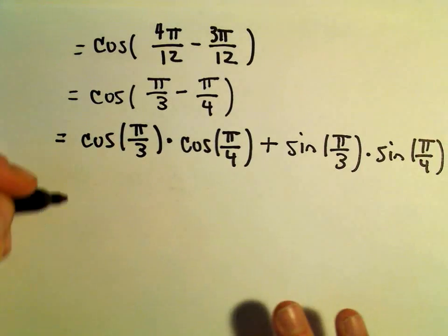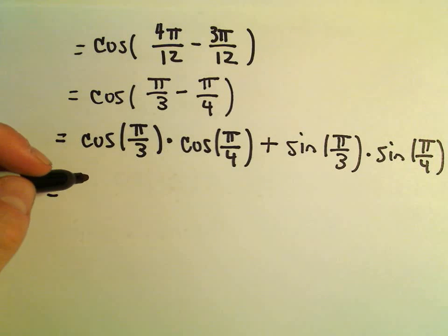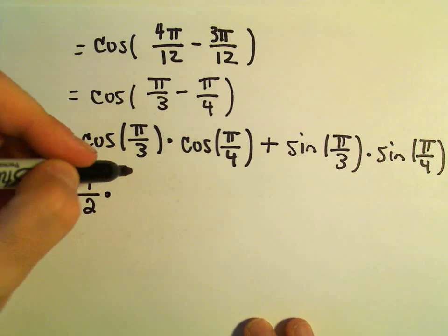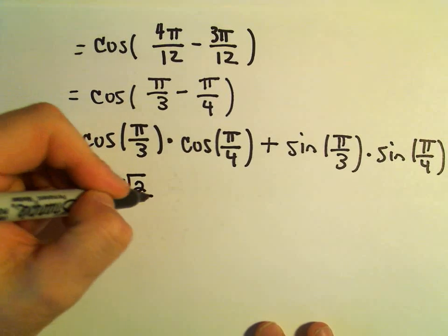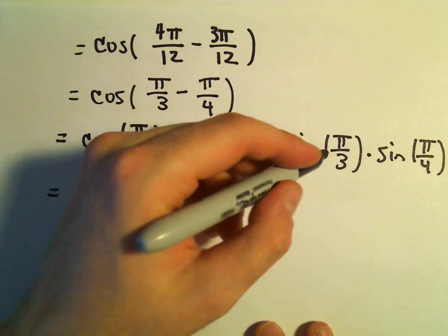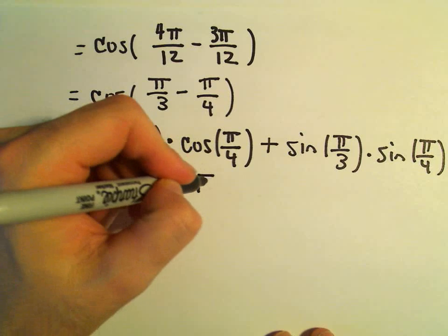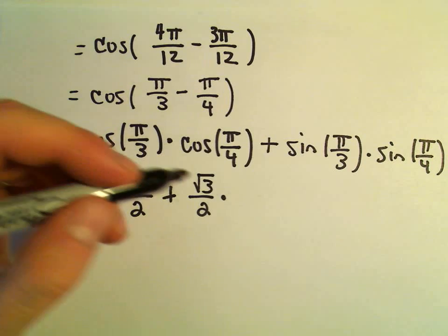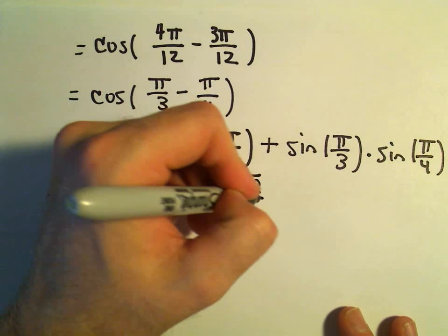And again, now it's just unit circle stuff. Cosine of pi over 3, that's going to be positive 1 half. Cosine of pi over 4 is going to be root 2 over 2. Sine of pi over 3, that's going to be root 3 over 2. Sine of pi over 4 is going to be simply root 2 over 2.